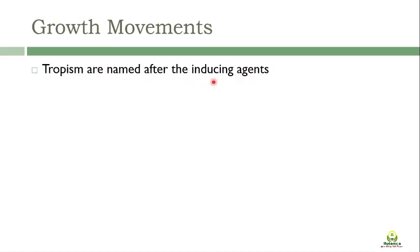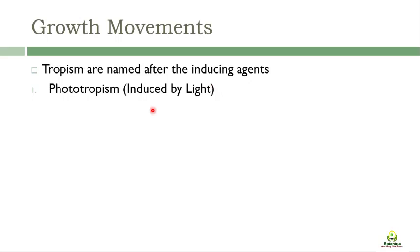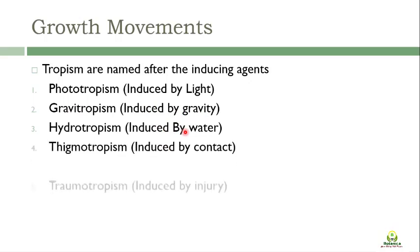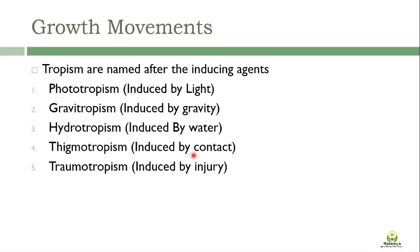That particular tropism - that particular movement of the plant - is named according to the inducible agent. For example, if the tropism is caused by light, it will be called phototropism, as light is the inducing agent. Similarly, gravitropism is induced by gravity, hydrotropism induced by water, sigmotropism induced by contact, and traumatropism induced by injury. These are all types of tropisms - movements of plants towards the stimulus.